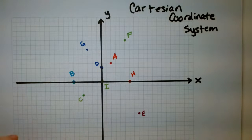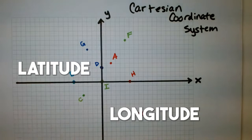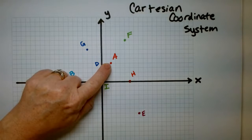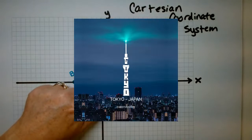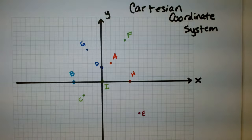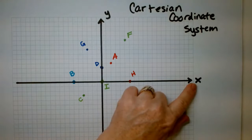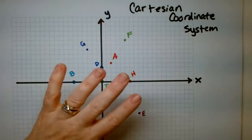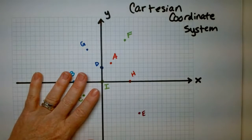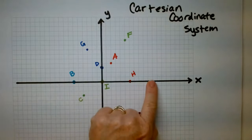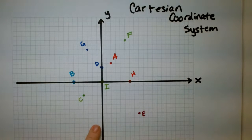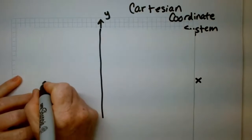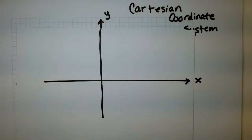On a map you'll have latitude and longitude, right? And if you have coordinates you can tell me exactly where you are — whether you're in New York or Tokyo — that will nail down a spot. On a sheet of paper we do it with the x-y coordinate system. You can have x here and y over here. For beginners, on the horizontal line I want an x, and on the vertical line I want a y.